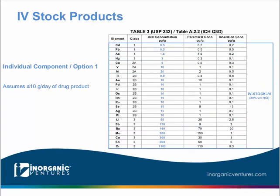The sixth product we are offering for 2018 is based upon the limits described in table three of USP 232, which corresponds to table A22 in Q3D. This data table represents the individual component approach described in 232, also known as option 1 in the Q3D method. This particular product, IV stock 70, represents a combination of all 24 of the elements specified in the methods, which is possible due to the lower concentrations detailed for the class 3 elements. This is the only product we're currently offering as a stock that's not directly based upon the permissible daily exposure table, and it primarily reflects the number of unique requests we've observed.